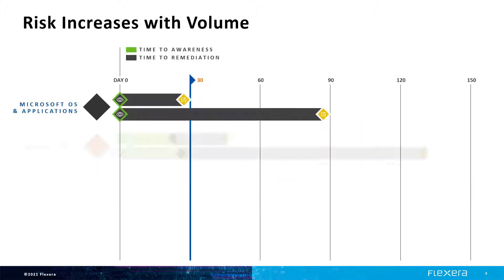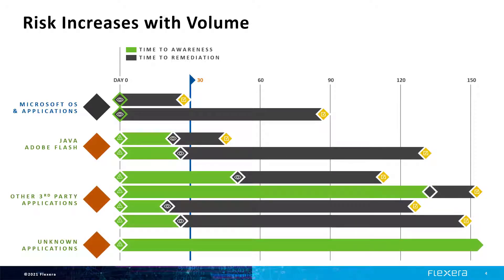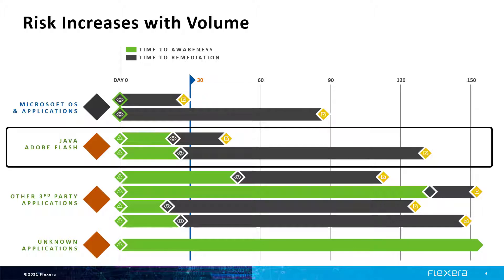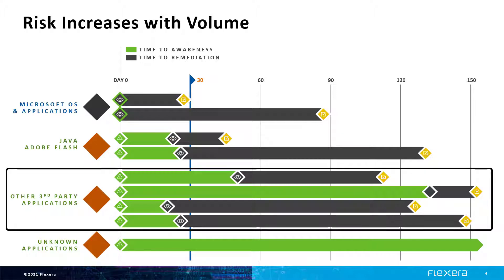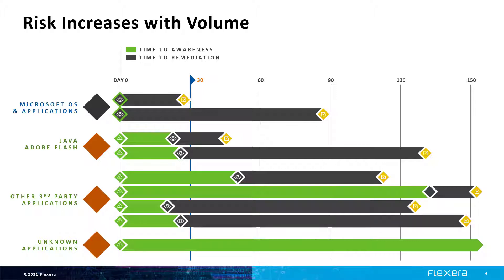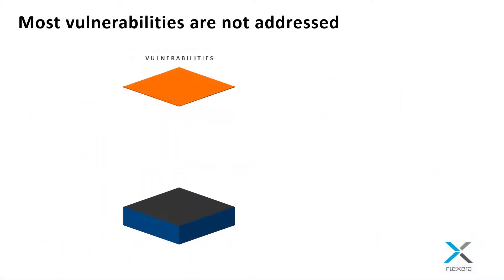The larger and more complex your environment, the more applications there are, and the greater the challenge of minimizing your risk becomes. With Microsoft vulnerabilities, you know pretty much right away on Patch Tuesday what vulnerabilities exist, and you have your patched versions to remediate them right away. That's an optimal situation, but a bit worse for well-known applications, worse still for lesser-known applications, and your risk window remains open indefinitely for those vulnerabilities you never become aware of.